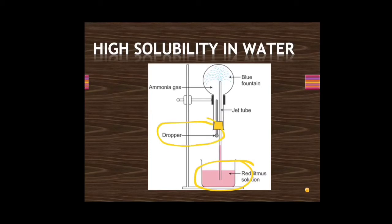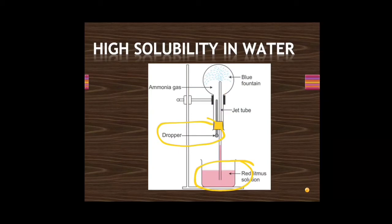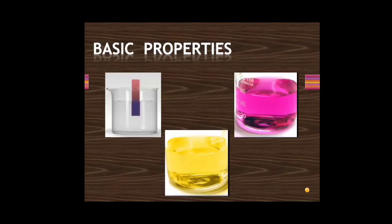Ammonia is so highly soluble in water that one drop of water dissolves a large amount of ammonia gas, creating suction. The red litmus solution is drawn up into the flask. Since ammonia is basic in nature, the red litmus turns blue. The main purpose of this experiment is to demonstrate the high solubility of ammonia in water.